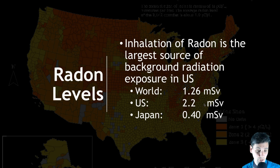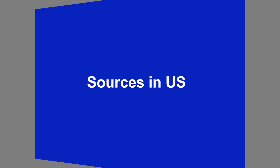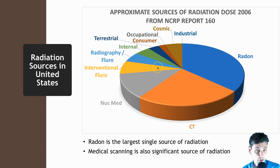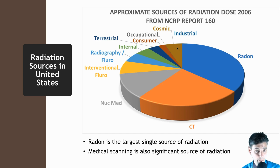If we look at all the different radiation sources, radon is actually the largest, and after that is medical imaging in terms of radiation exposure to the population — things such as CT, nuclear medicine, fluoroscopy, and standard radiography. Cosmic rays also have a significant fraction of the overall exposure to the population. The key takeaways are that medical imaging does have a significant fraction of radiation dose to the population, and that radon is actually the largest source.